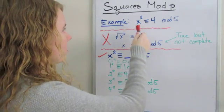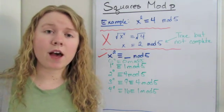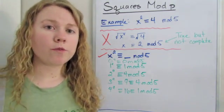So I have an example. If you have x² ≡ 4 mod 5 and you want to solve for x, the mistake people usually make is just doing it straightforward.